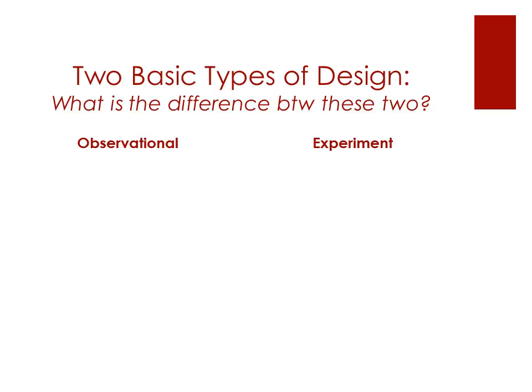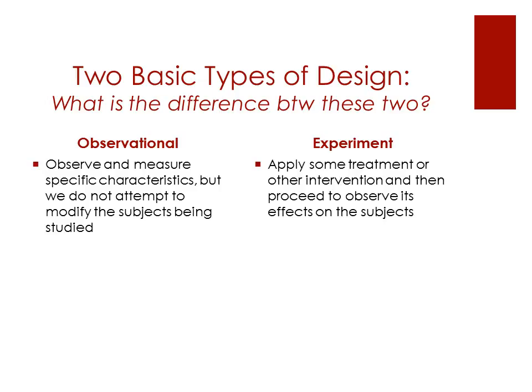In this section, we're going to look at two basic types of design: observational and experimental, and make sure we're able to distinguish between the two. In an observational study, we observe and measure specific characteristics, but we do not attempt to modify the subjects that are being studied.